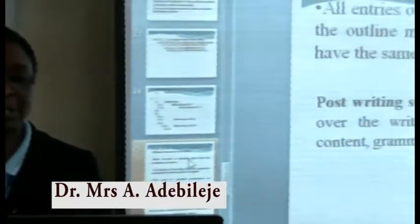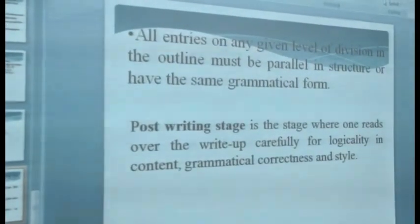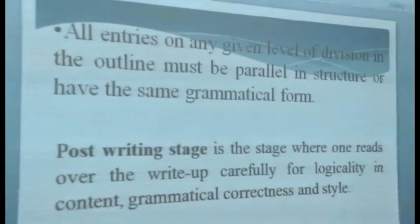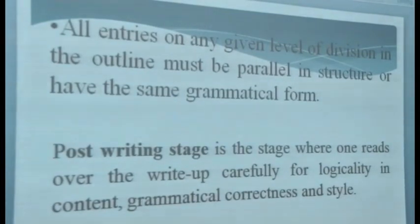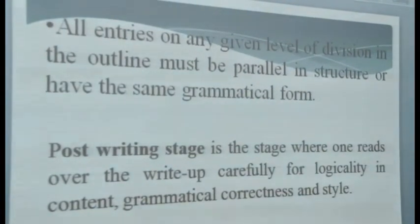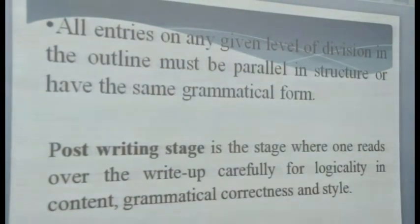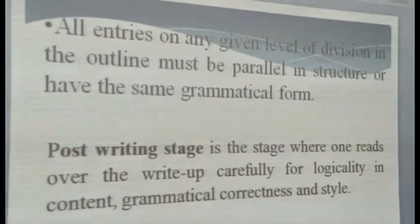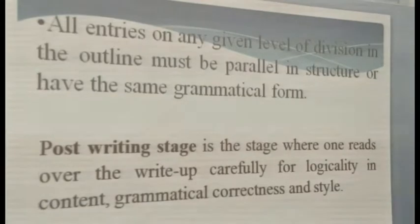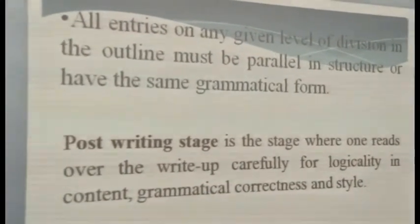Other rules that must be considered: all entries on any given level of division in the outline must be parallel in structure or have the same grammatical form. In other words, if you are listing your points using complete sentences — 'My friend likes food,' 'My friend goes to church every Sunday,' 'My friend does not like whatever' — the next point should also be a complete sentence.